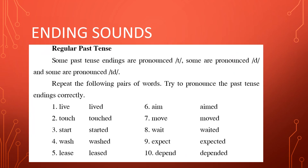Regular past tense. Some past tense endings are pronounced /t/, some are pronounced /d/, and some are pronounced /ɪd/. Repeat the following pairs of words. Try to pronounce the past tense endings correctly.